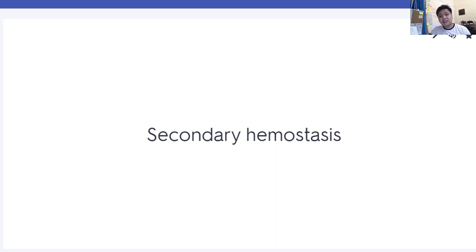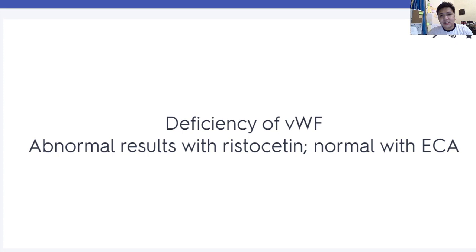Von Willebrand disease is a deficiency of von Willebrand factor. Abnormal results with ristocetin, but normal with ADP. Please review your aggregation studies. Bernard-Soulier syndrome involves GP1b deficiency.